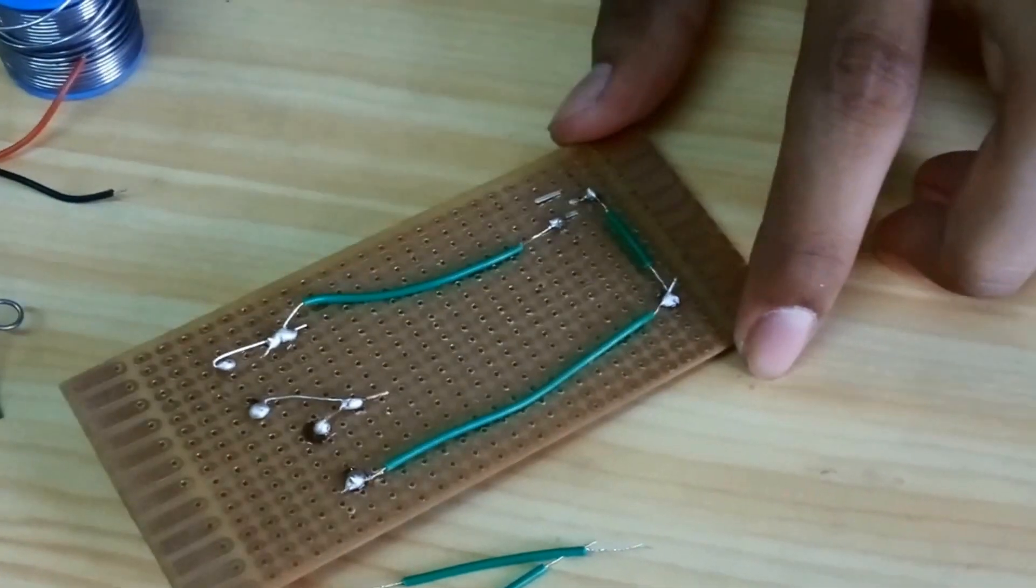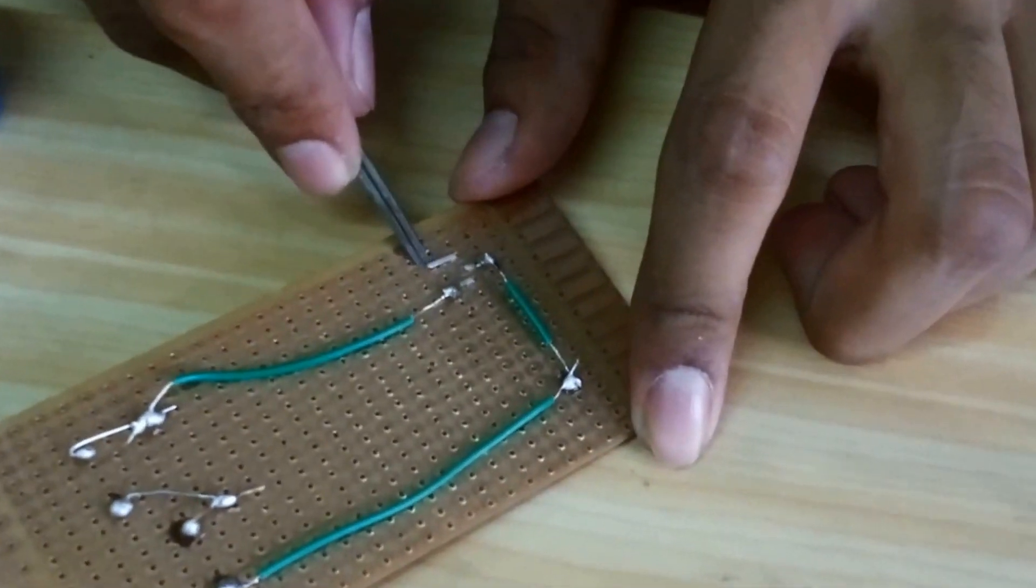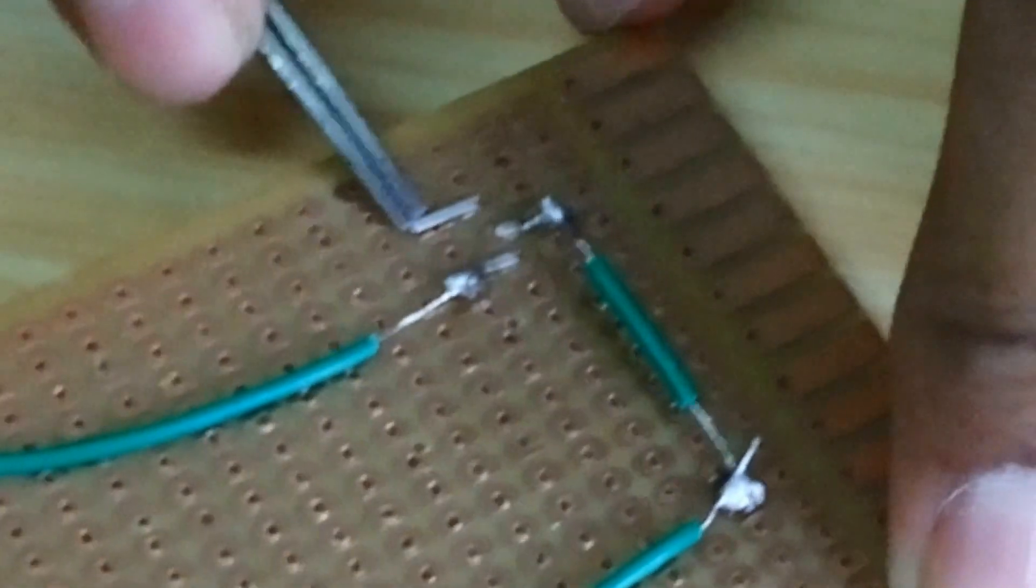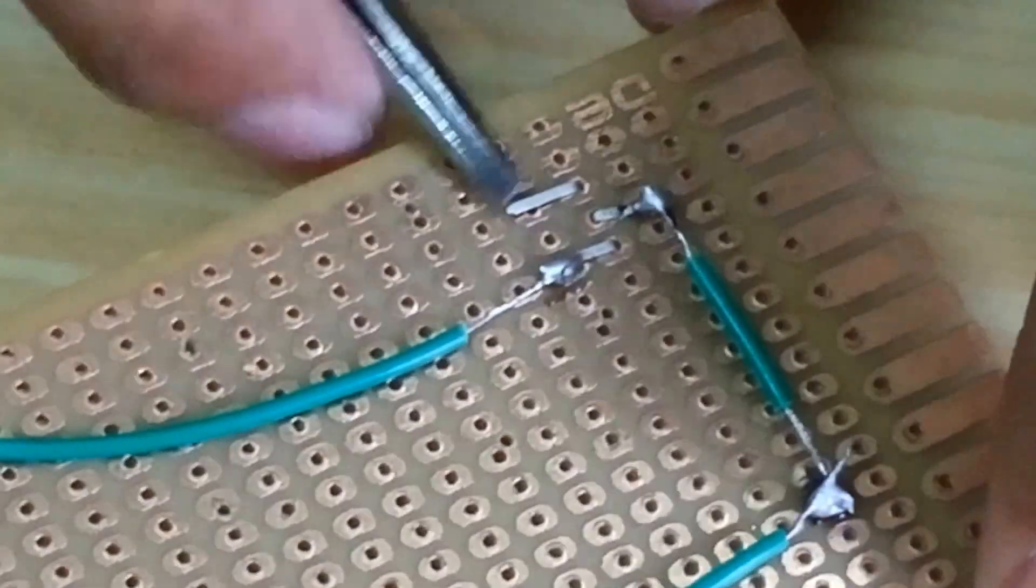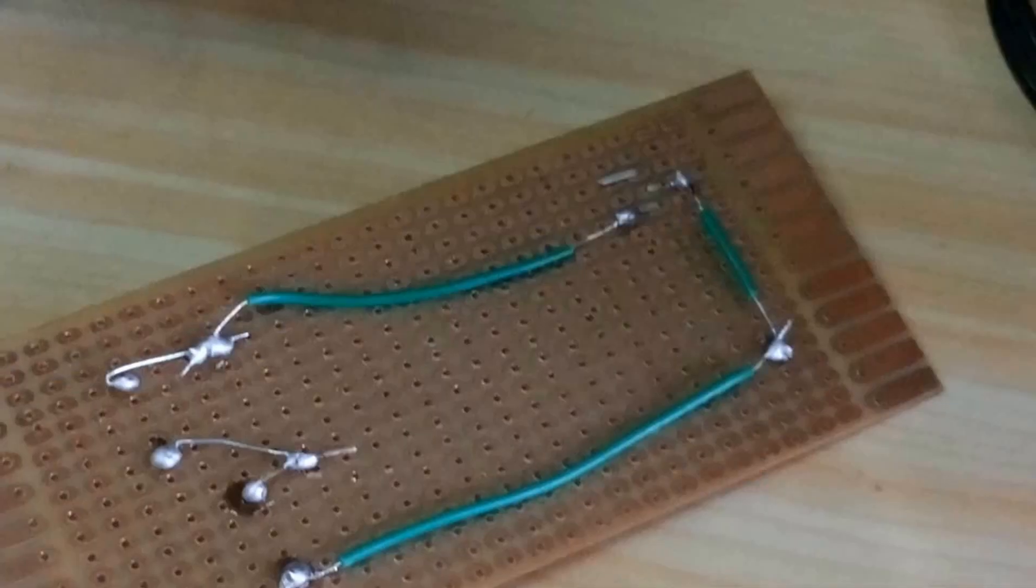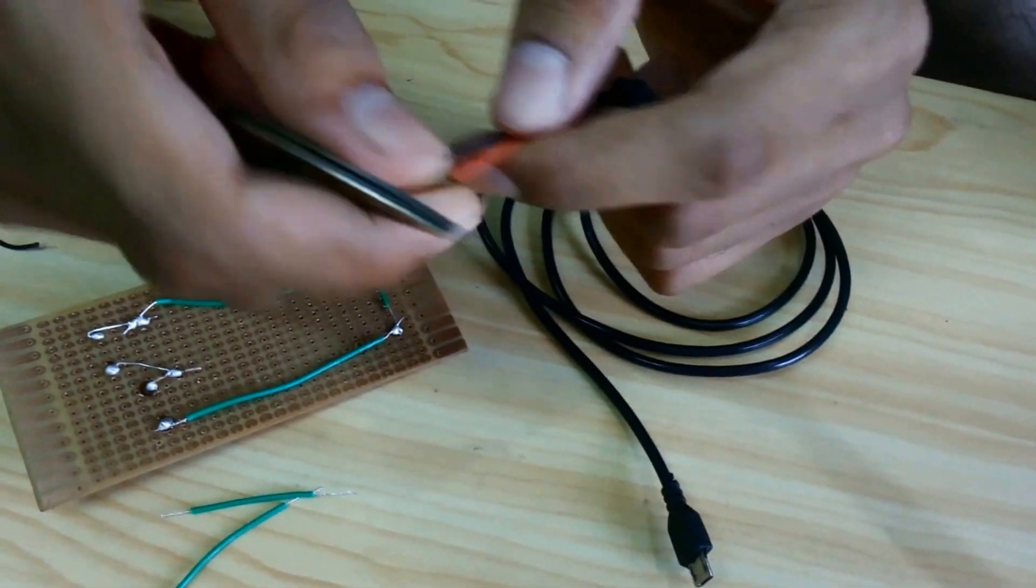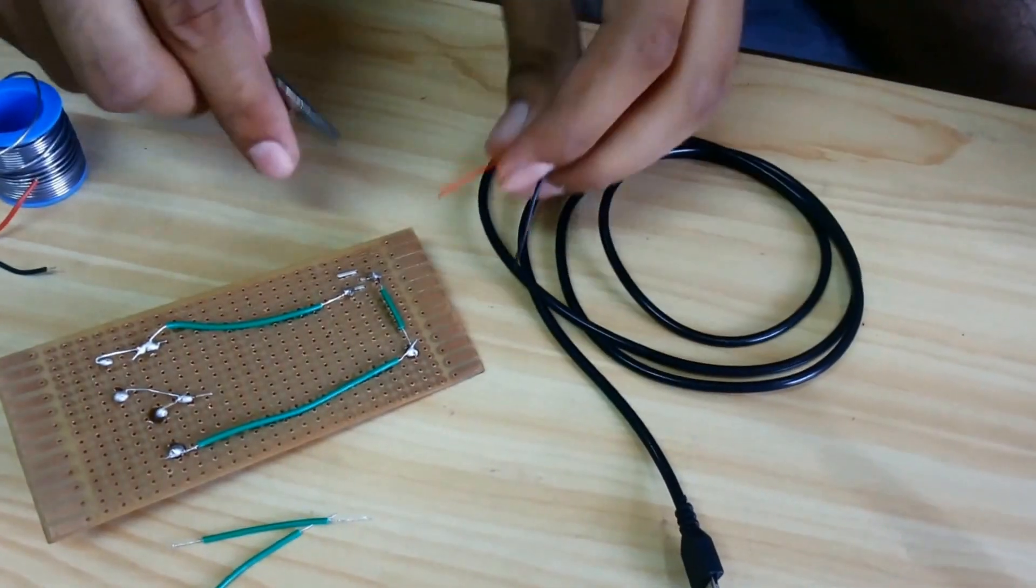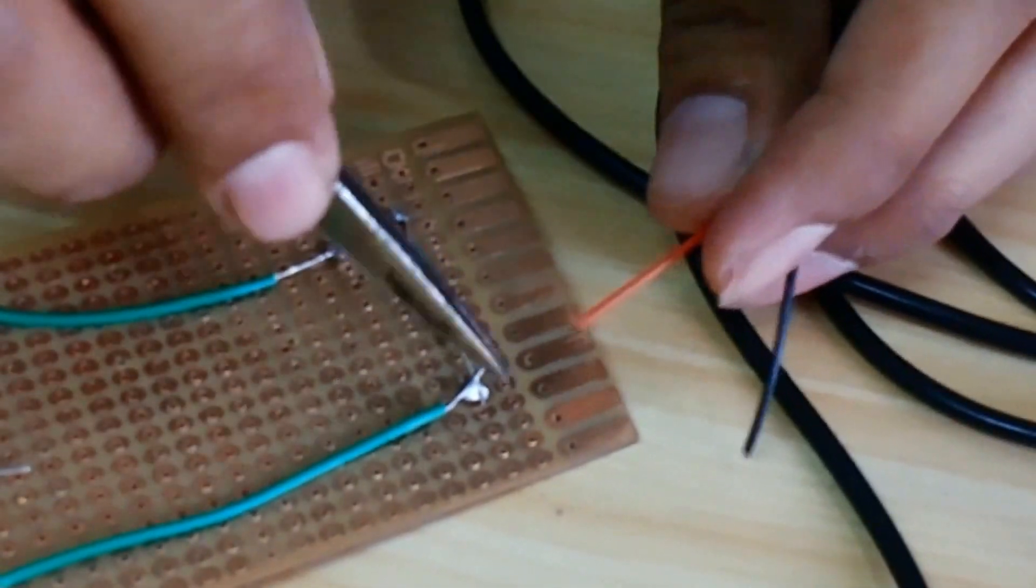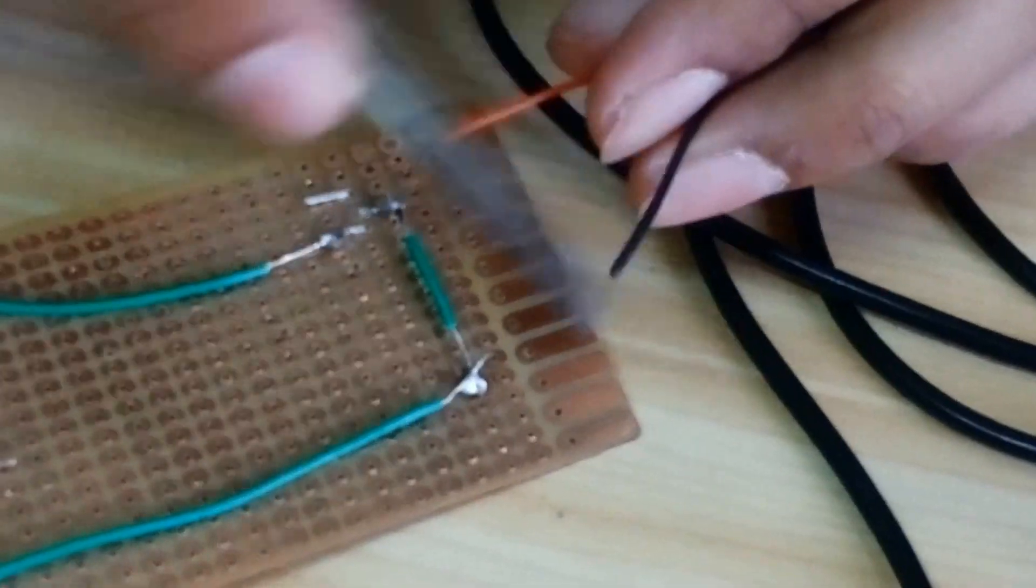Now here is the output pin left. It will be connected with the charger supply cable positive end. The charger supply cable, the positive end is the red one. It will be connected to the output and this ground part will be connected to the black wire.